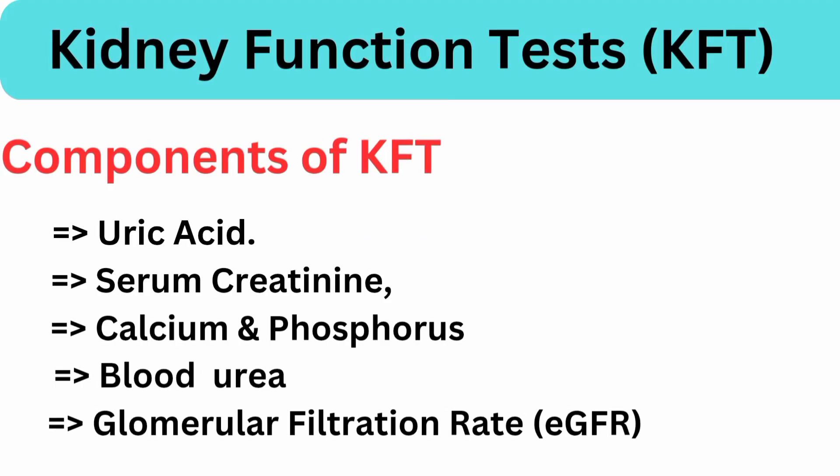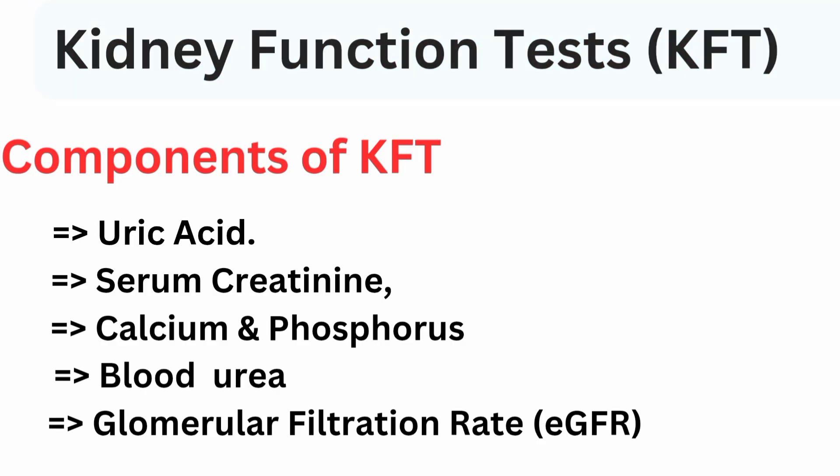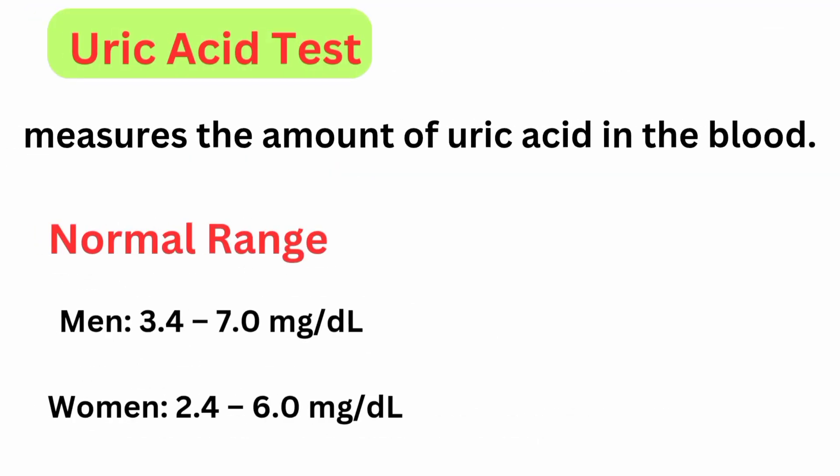Kidney function test (KFT): components include uric acid, serum creatinine, calcium and phosphate, blood urea, and glomerular filtration rate (GFR). Uric acid test measures the amount of uric acid in the blood. Normal range: men is 3.4 to 7.0 mg/dL, women is 2.4 to 6.0 mg/dL.